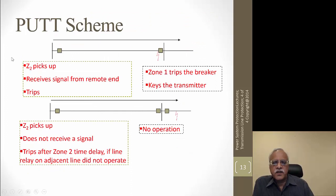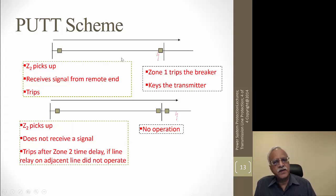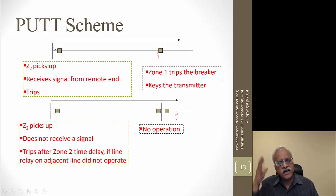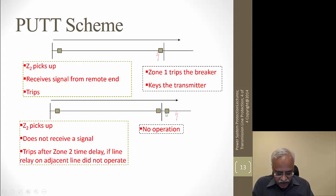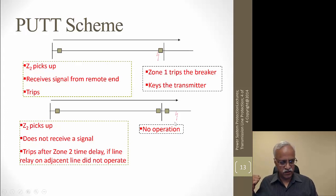In the permissive underreach scheme: if there is a fault on the line, zone 2 picks up. Zone 1 trips the breaker and keys the transmitter, sending a signal to the remote end. At the remote end, zone 2 has picked up but does not trip immediately due to its time delay. As soon as it receives the signal from the remote end, it trips. The delay in tripping is just the communication time from station B to station A. If there is a fault outside the line section, there is no relay operation at station B because the fault is behind — there is no reverse-looking relay.